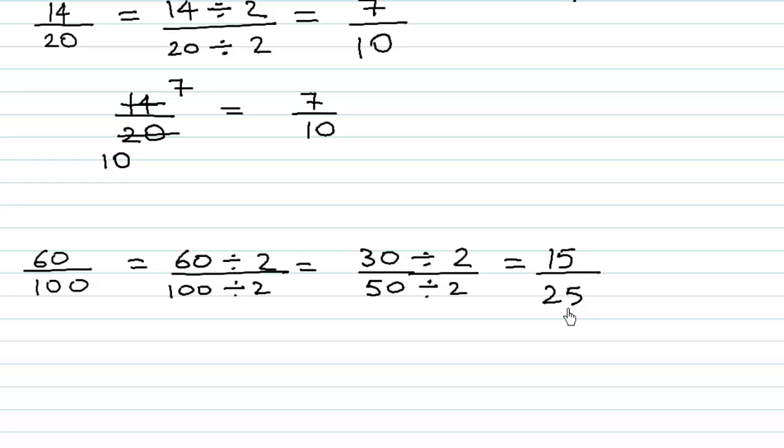Now 15 and 25 don't go in the table of 2, but they both go in the table of 5. So we can divide both by 5: 15 divided by 5 is 3, and 25 divided by 5 is 5. So 60 over 100 is the same as 3 over 5.